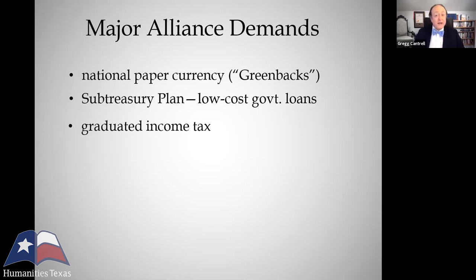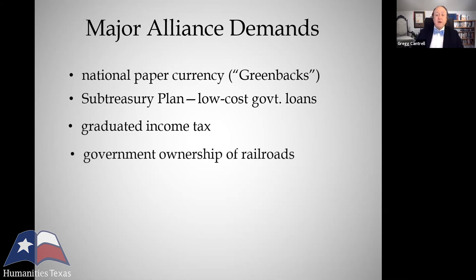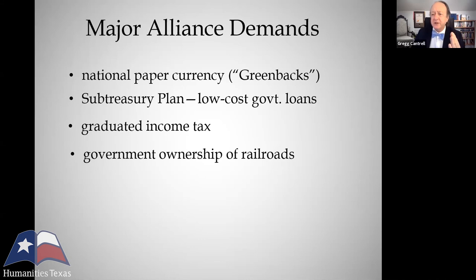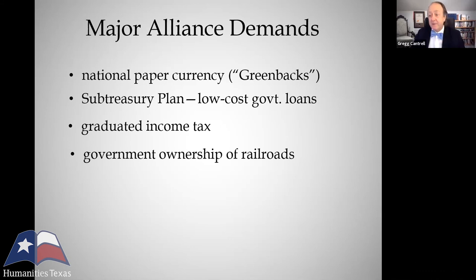The Alliance called for a graduated federal income tax, whereby the wealthy would pay a larger share of the nation's tax burden than the poor. They called for government ownership of the railroads — it was clear to Texans that government regulation by means of a railroad commission had failed — so they said the government should instead purchase the major railroad lines and operate them as a nonprofit public utility in the interest of farmers. The argument being very much like our modern argument for interstate highways: that they are paid for by taxpayer monies, everyone profits from them, the country benefits, and they should be paid for by the people.